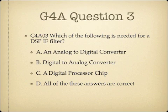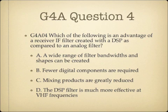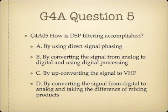Question 3: Which of the following is needed for a DSP-IF filter? A, an analog-to-digital converter; B, a digital-to-analog converter; C, a digital processor chip; or D, all of these answers are correct. Question 4: Which of the following is an advantage of a receiver IF filter created with a DSP as compared to an analog filter? A, a wide range of filter bandwidths and shapes can be created; B, fewer digital components are required; C, mixing products are greatly reduced; or D, the DSP filter is much more effective at VHF frequencies. Question 5: How is DSP filtering accomplished? A, by using direct signal phasing; B, by converting the signal from analog to digital and using digital processing; C, by up-converting the signal to VHF; or D, by converting the signal from digital to analog and taking the difference of mixing products.